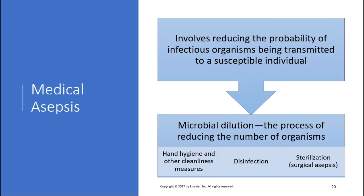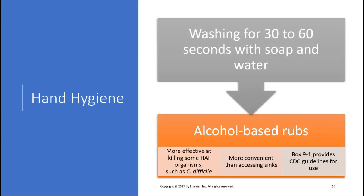Medical asepsis involves reducing the probability of infectious organisms being transmitted to a susceptible individual through microbial dilution — reducing the number of organisms through hand washing and keeping clean. Disinfection and sterilization — complete surgical asepsis — ensure no pathogens are found. Hand hygiene requires washing hands for 30 to 60 seconds with soap and water, getting under your nails and scrubbing cuticles in each crease of your joints, because bacteria hide there. Alcohol-based rubs are also very effective and more convenient. See Box 9.1 for the CDC guidelines.